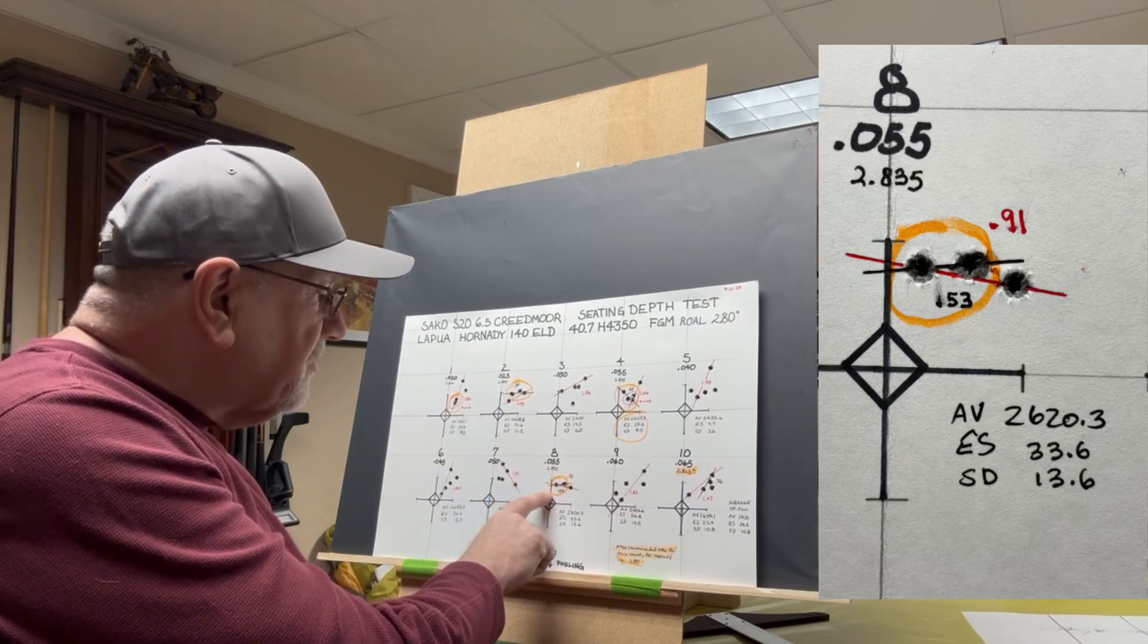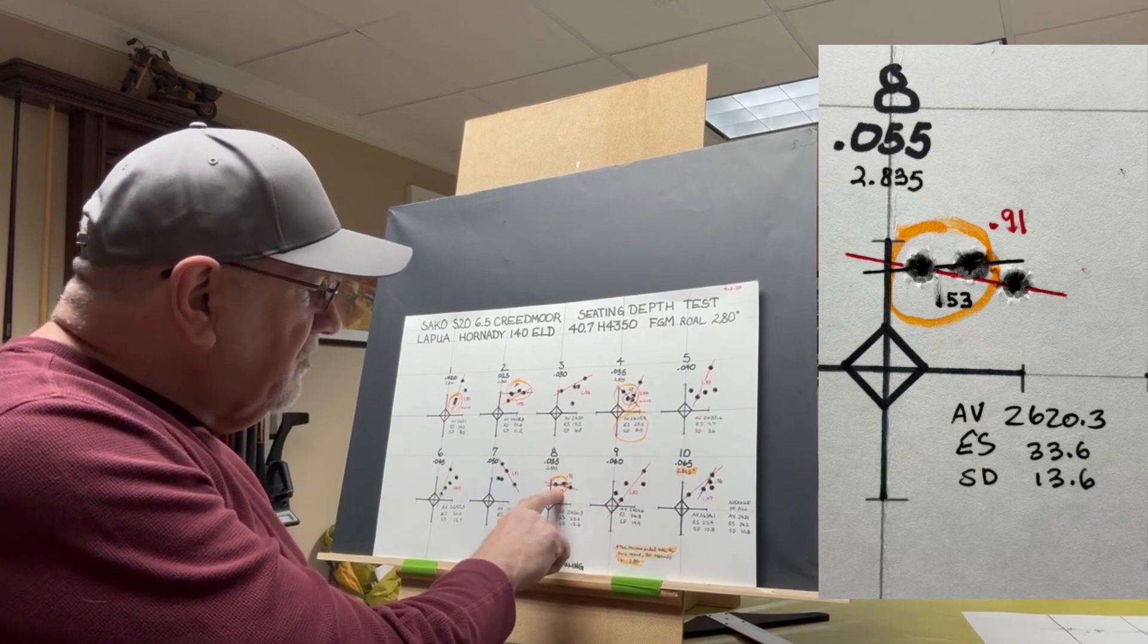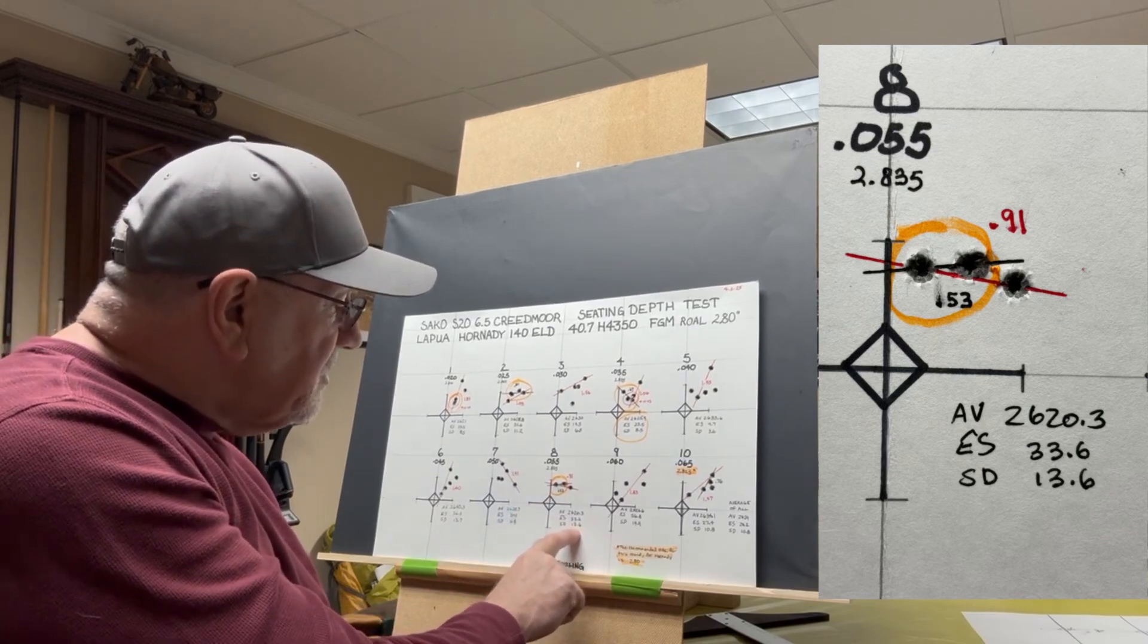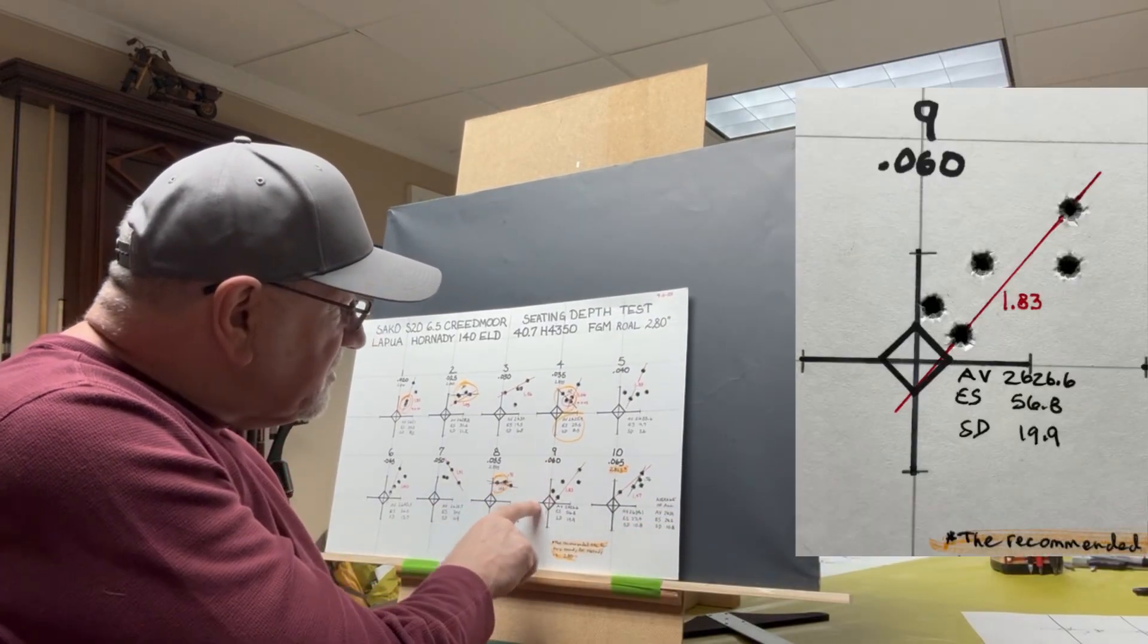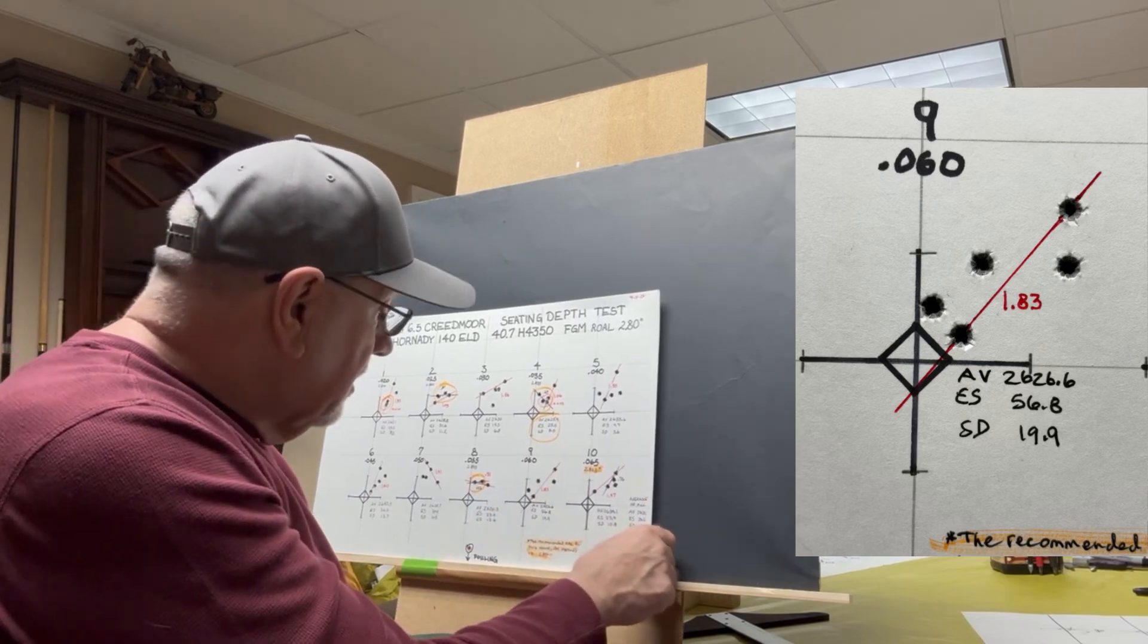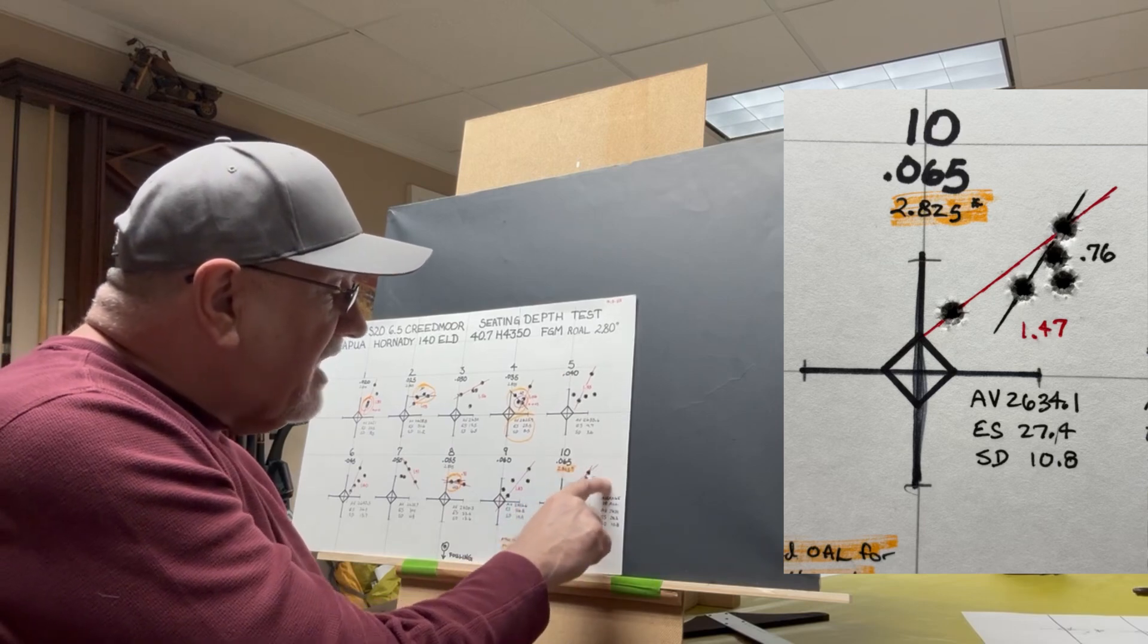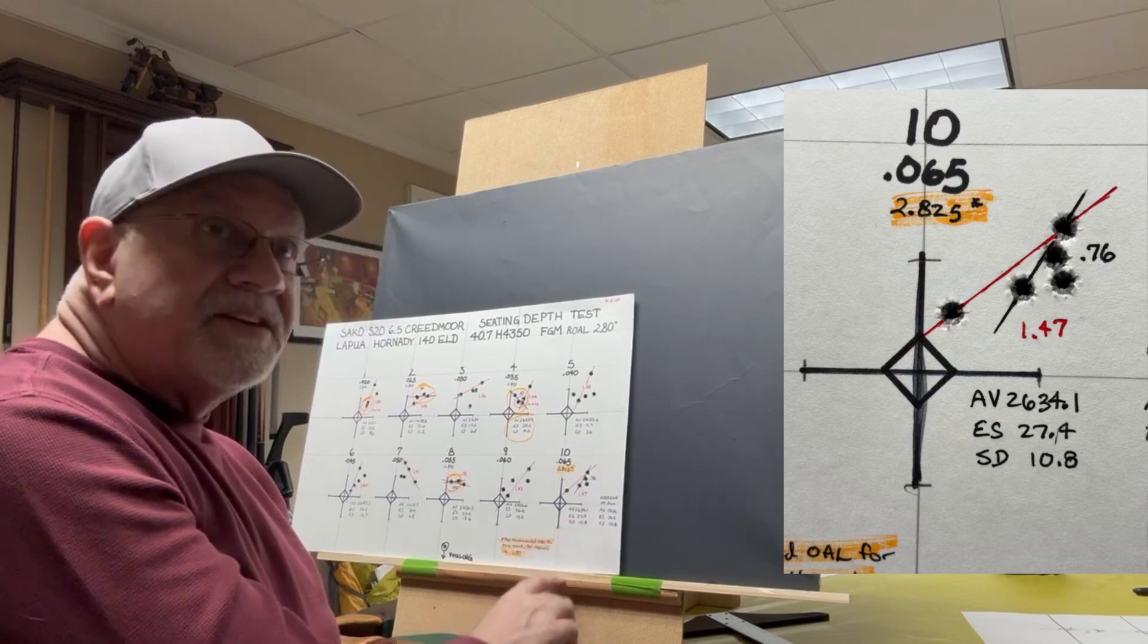At 55 thousandths off the rifling, we've got a group of 0.91, and if you look at the best 4 out of 5, we've got those four shots clustered together in two holes here at 0.53 inches, with a standard deviation of 13.6. At 60 thousandths off the rifling, we've got a group of 1.83, so really spreading out there. At 65 thousandths off the rifling, we've got a group of 1.47, but again, if you look at that best 4 out of 5, you've got a group of 0.76, and a standard deviation of 10.8.